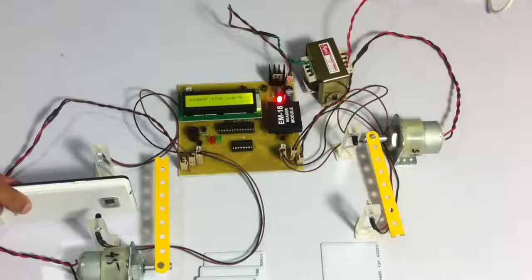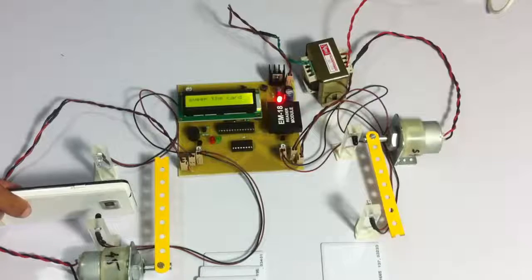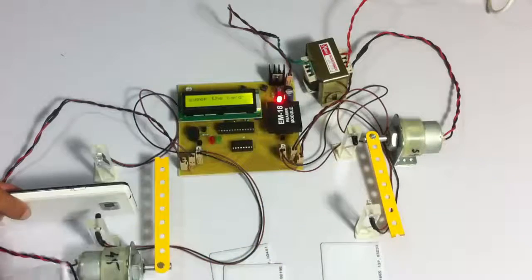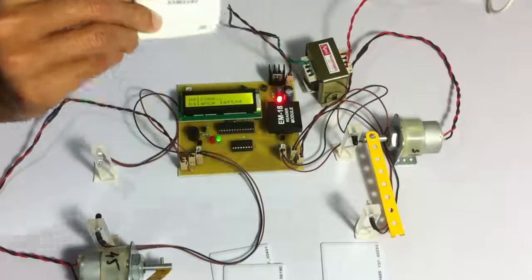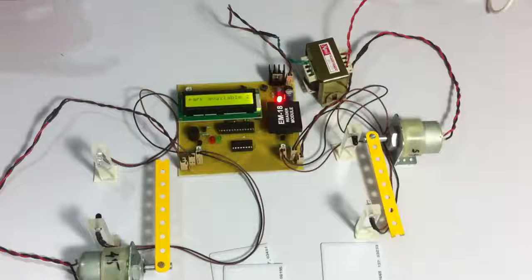As you can see, as soon as the vehicle entered, it was detected and it's asking us to swipe the card. Once the card was swiped, we assume that the vehicle entered and it's showing that the available slots in the parking area are 2.